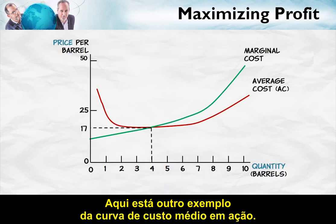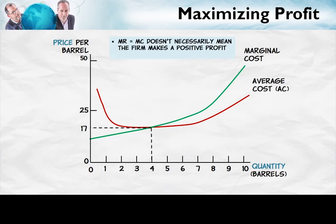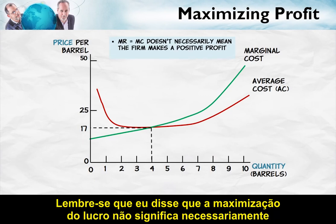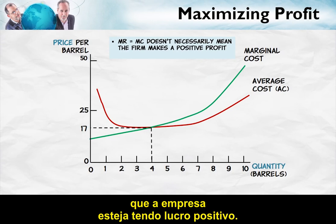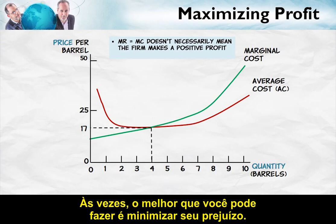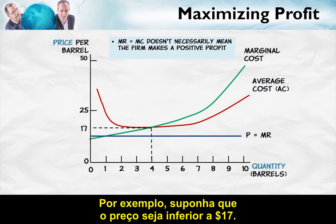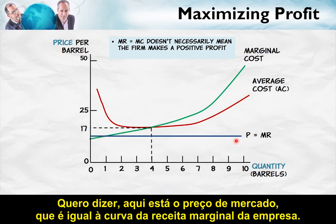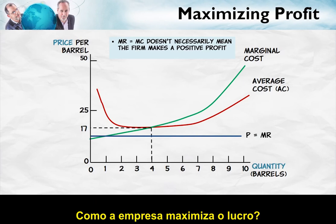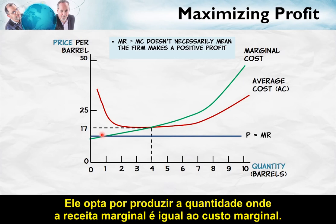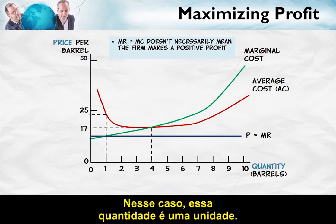Here's another example of the average cost curve in action. Remember, profit maximization doesn't necessarily mean the firm is making a positive profit — sometimes the best you can do is to minimize your losses. For example, suppose that the price is below $17. Here's the market price, which equals the firm's marginal revenue curve. The firm profit maximizes by choosing the quantity where marginal revenue equals marginal cost. In that case, this quantity is 1.